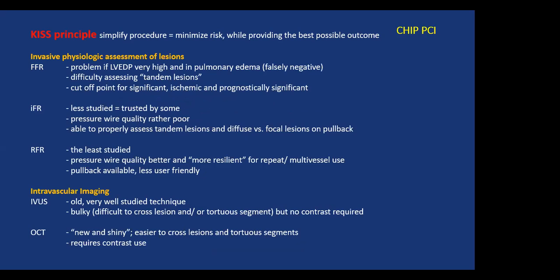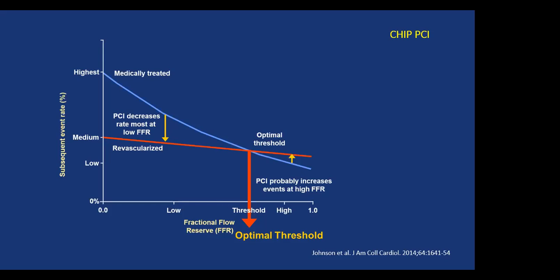The KISS principle involves FFR, IFR, RFR, and intravascular imaging — IVUS and OCT — to help us choose the right lesion and the right outcome. We're trying to use the optimal threshold below which revascularization makes sense and actually improves patient outcome, irrespective of how bad a lesion looks on an angiogram. If you intervene on lesions above the threshold, patient outcomes get worse. Treat only the lesions that need to be done and provide the best benefit.